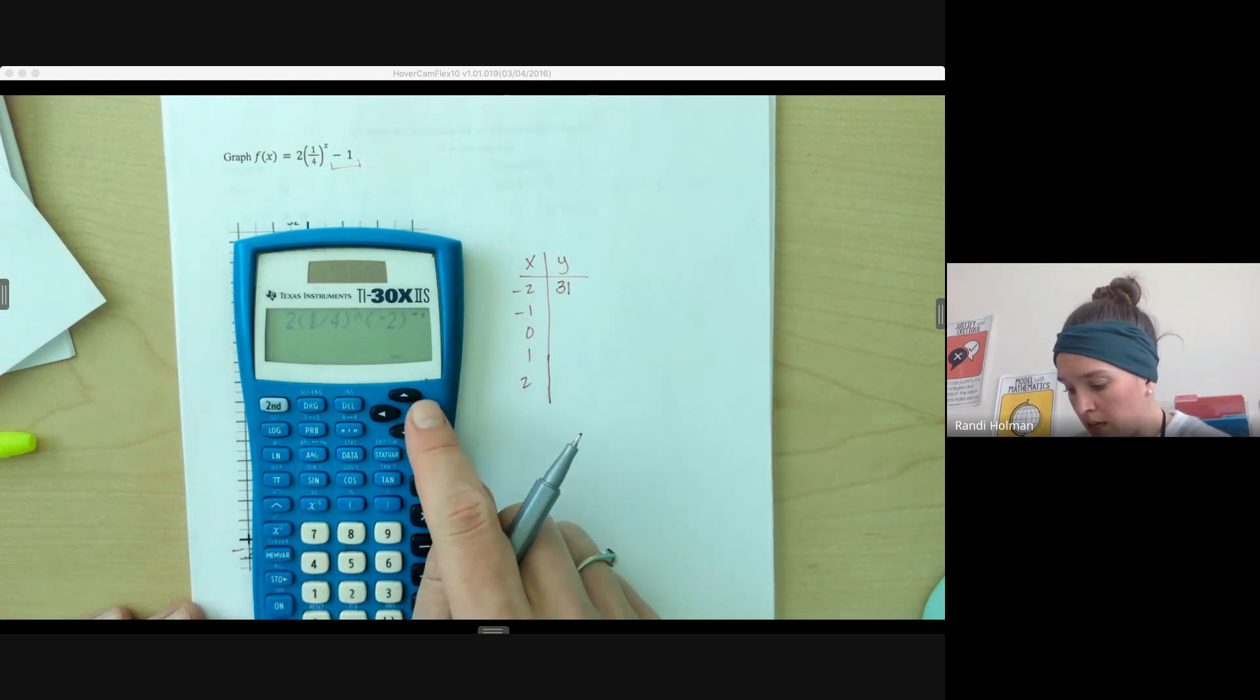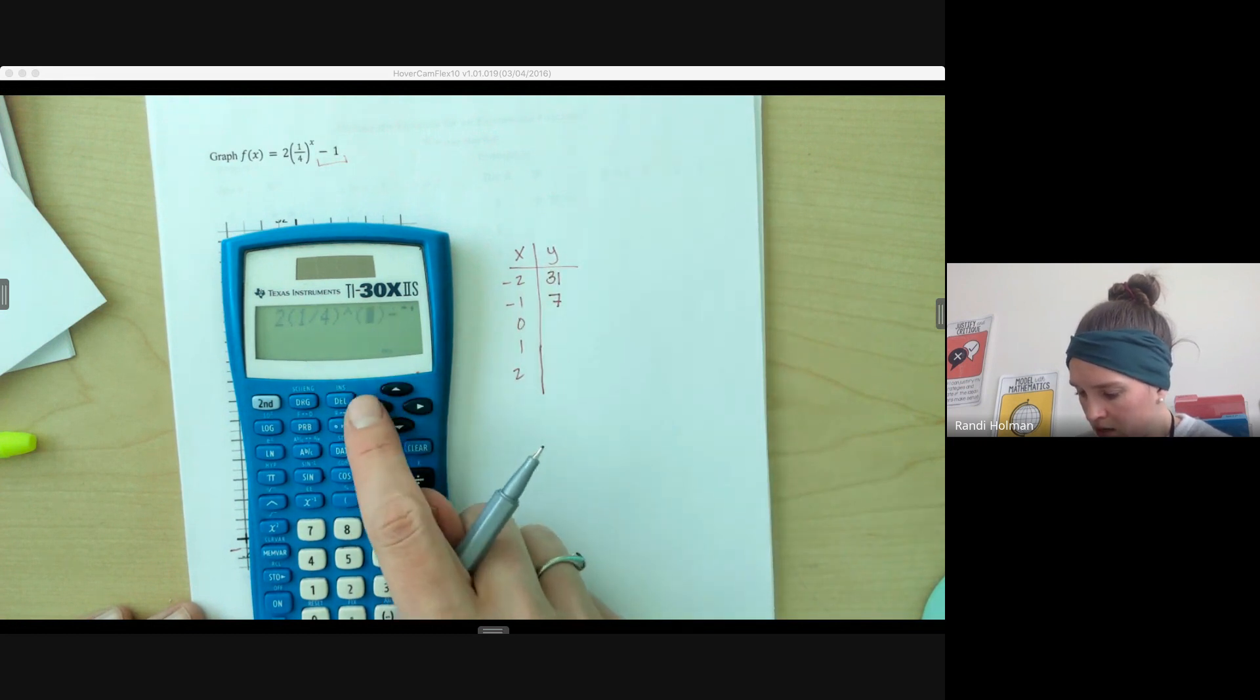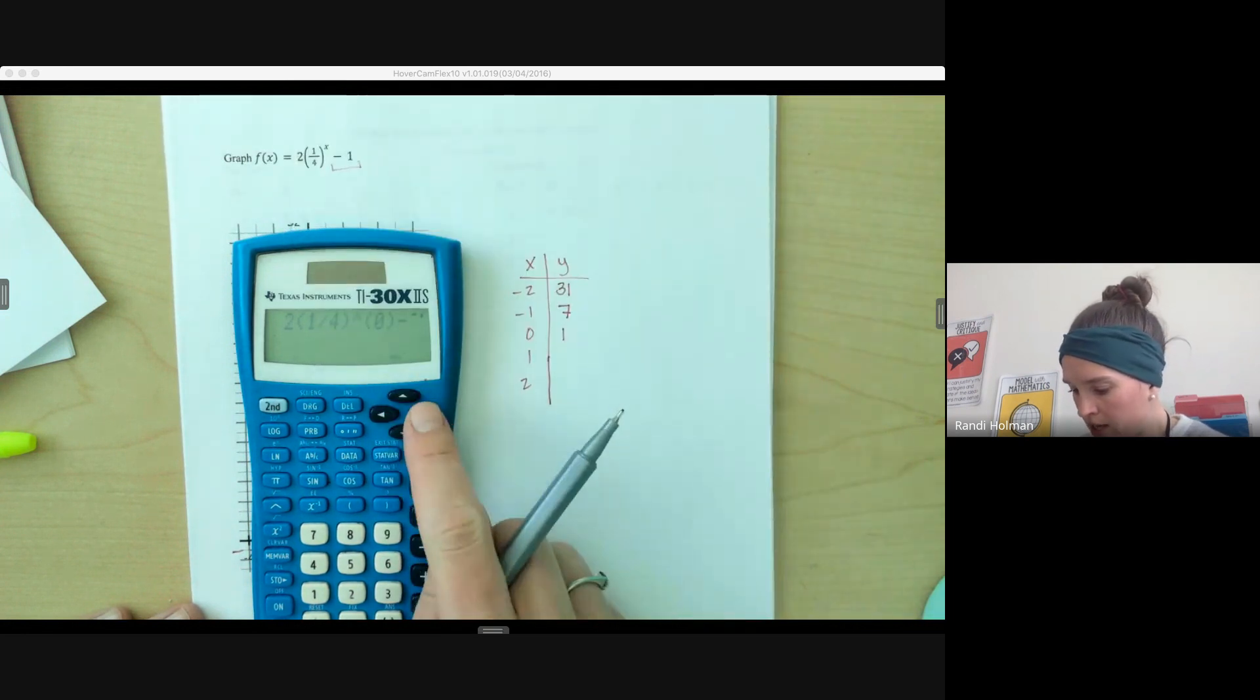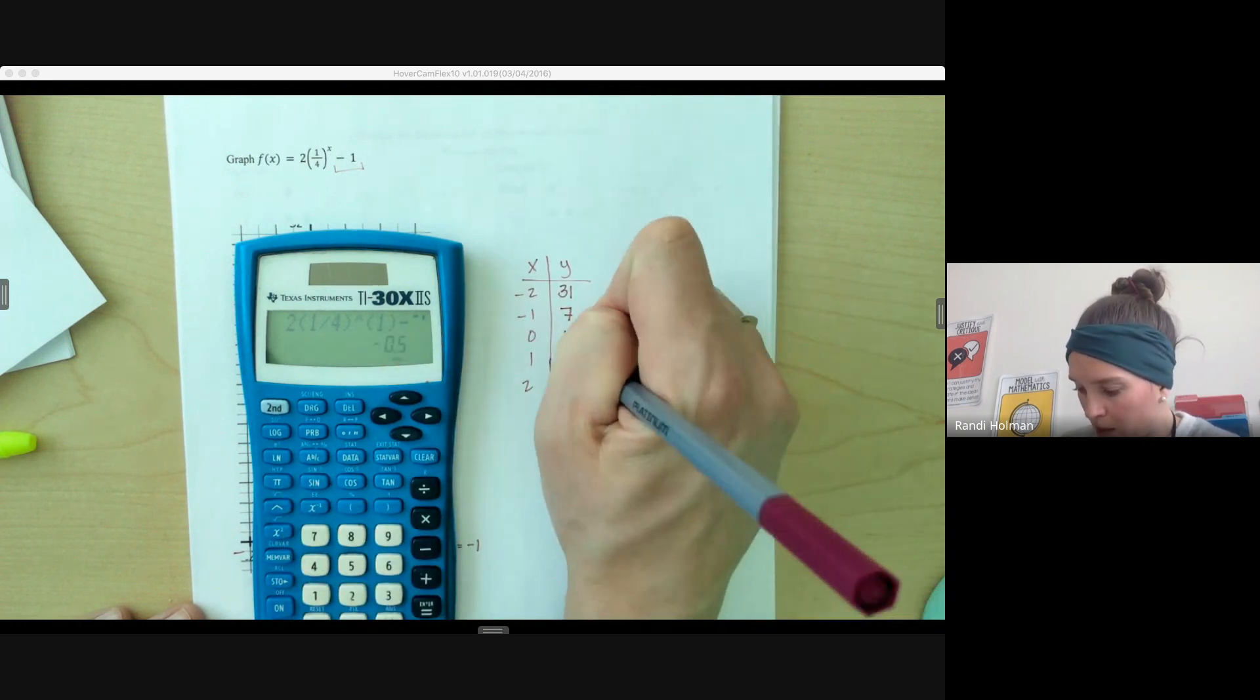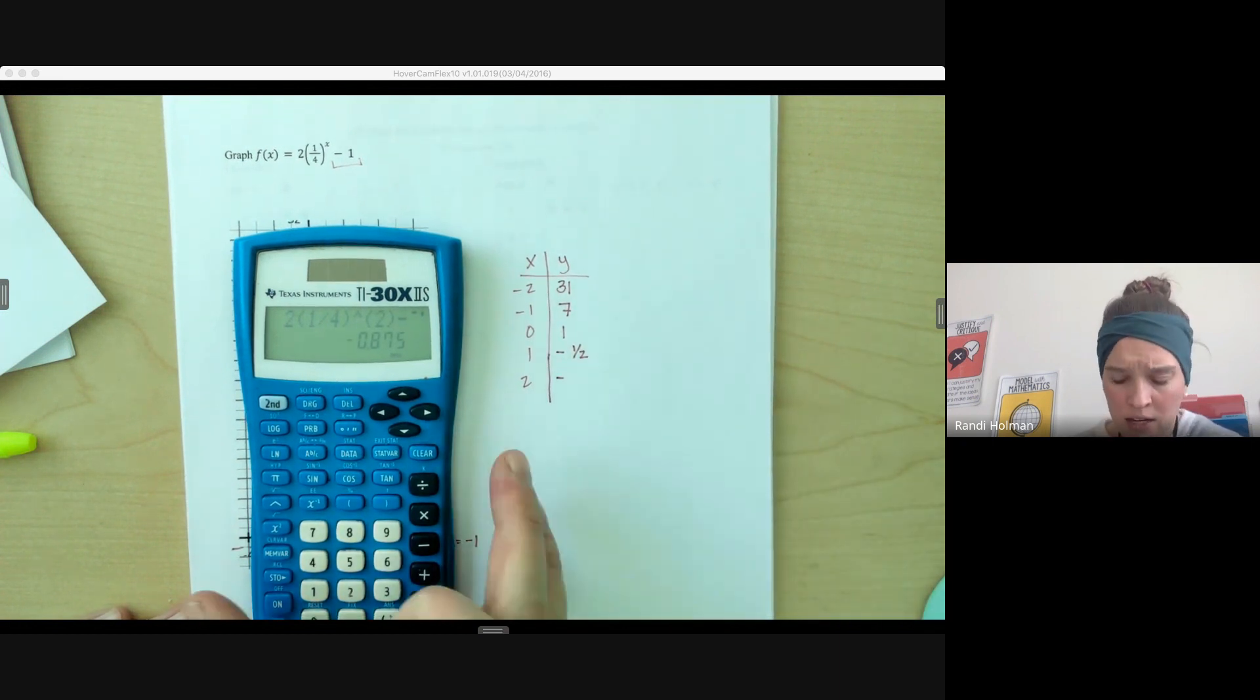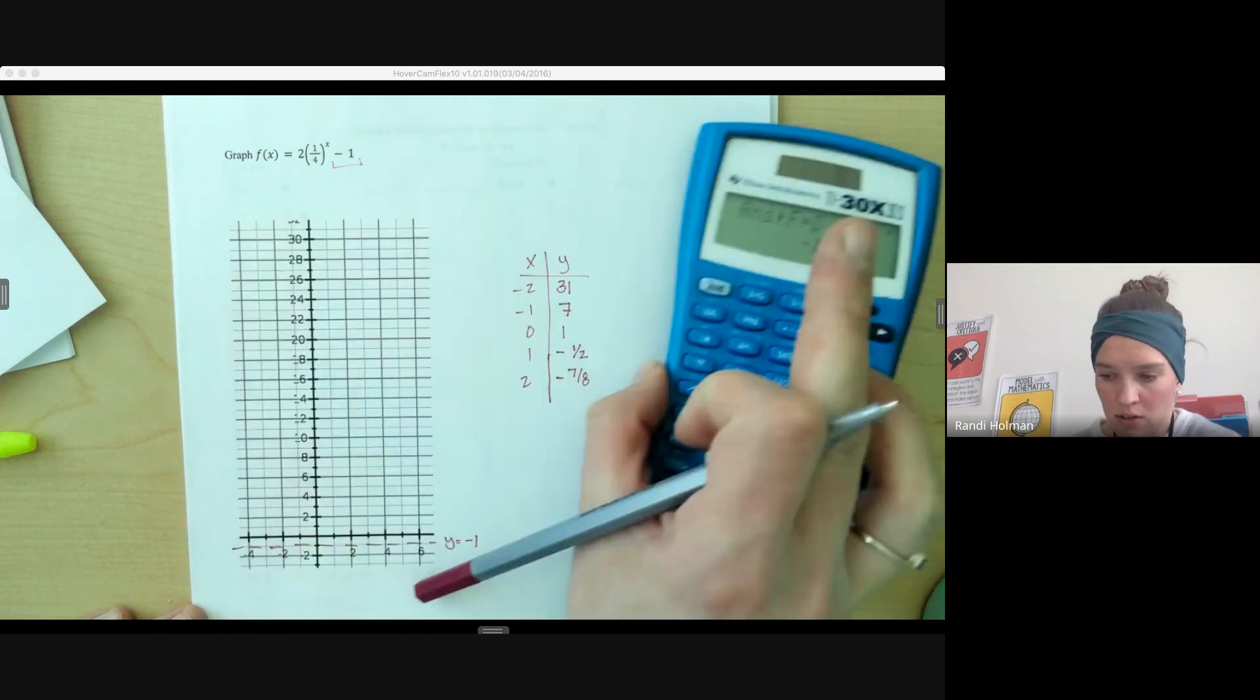Then we're just going to change this negative 2 to a negative 1. And we get 7. Change that negative 1 to a 0. We get 1. Let's make sure that makes sense. So normally my y-intercept would be at 2. 2 minus 1 is 1. Change that 0 to a 1. We get negative 0.5. Make sure you write that as a, or think about it as a fraction. Change that 1 to a 2. Negative 0.875. If you don't know that one, use the second fraction to decimal. And that's 7/8. That can help you plot it a little better. But also the 0.875 is also acceptable.